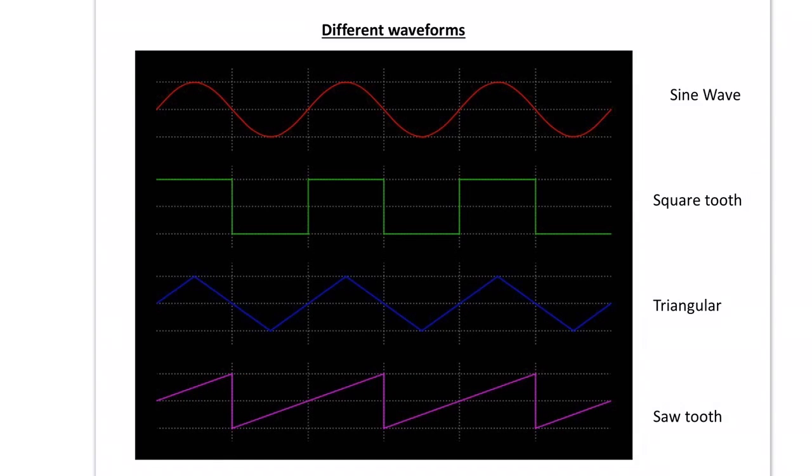With the AC waveform we can look at this and we're talking about frequency in cycles. A cycle is from where a waveform starts to where it repeats itself. Well in AC it starts here and it starts to repeat itself there. So that is a full cycle.